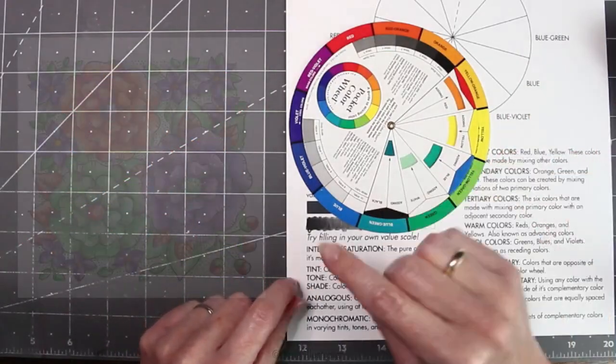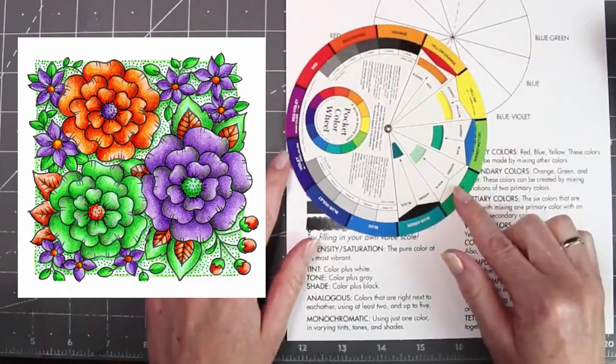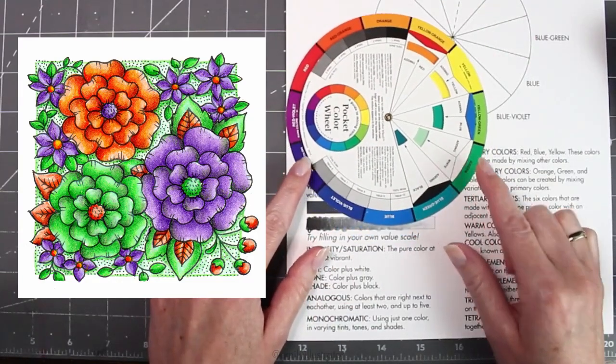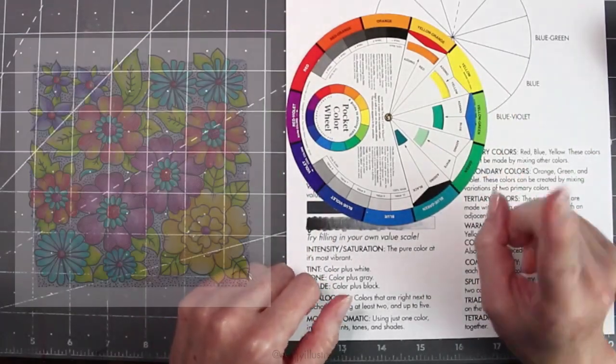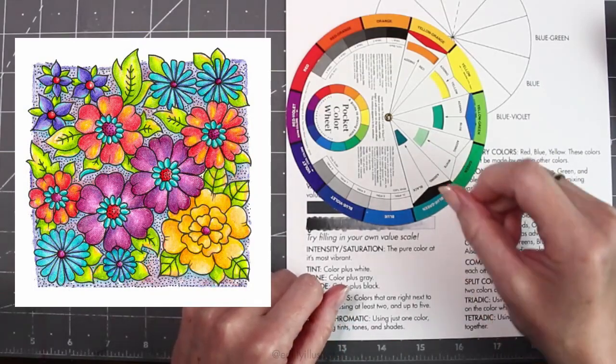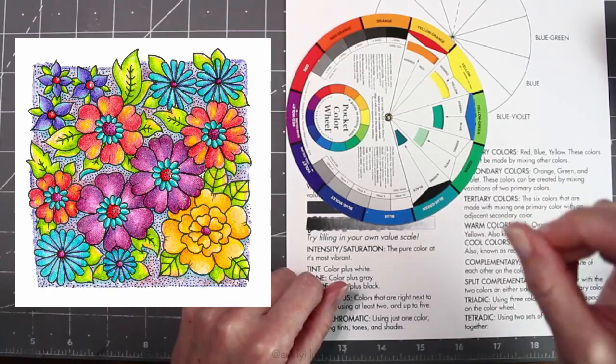The next category is secondary colors. This includes orange, green, and violet. These colors are created by mixing variations of two primary colors.